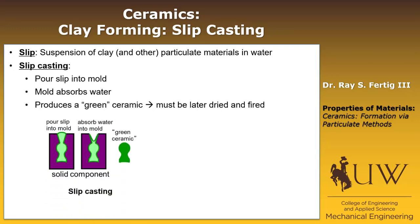A visual of that is shown here where the purple represents the mold. The green is the slip being poured into the mold. As the water is taken out — absorbed by the mold and some evaporation — the part shrinks somewhat because there's mass being removed, and we're left with a green ceramic.